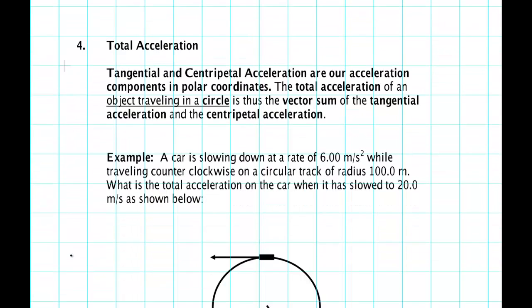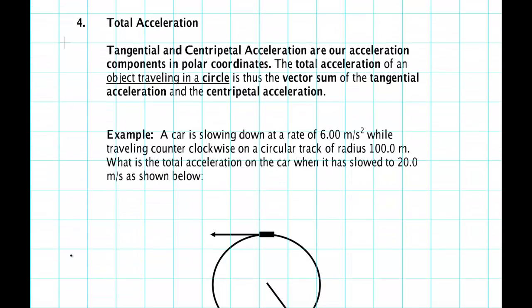The total acceleration has two components: one is the centripetal component pointing down, another one is the tangential part pointing over. You put those two sides of the triangle together and you get the total acceleration.